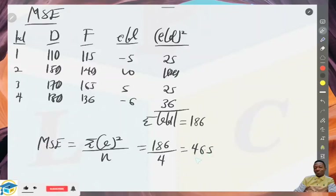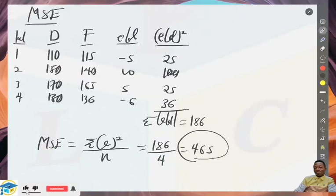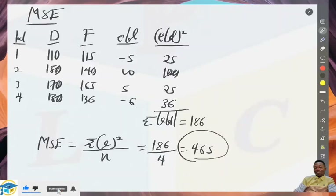This error value is very large. This kind of forecasting data wouldn't be more desirable for us to rely on to make decisions, because the forecast values were very large and that wouldn't help to make better predictions going forward as an organization. This is how we calculate the Mean Square Error.